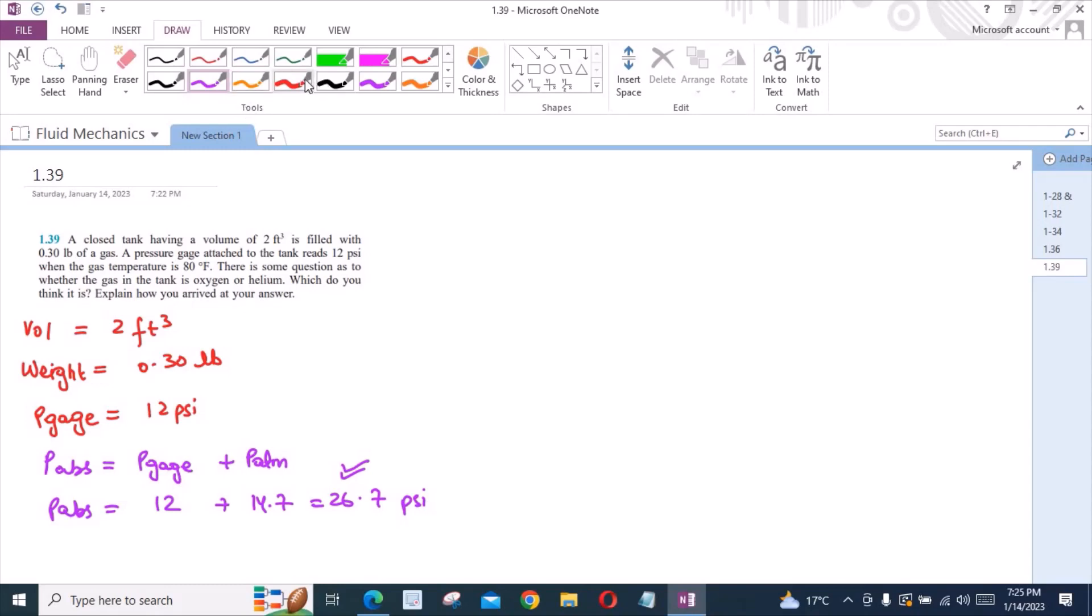Similarly, we have been given the temperature in terms of Fahrenheit. But we would use the temperature in terms of Rankine. So to convert the temperature from Fahrenheit to Rankine, we have to add 460. 80°F plus 460 is equal to 540°R. We would be using this value.